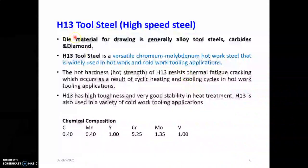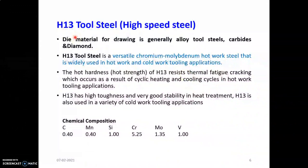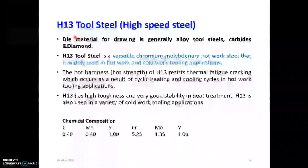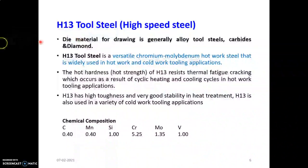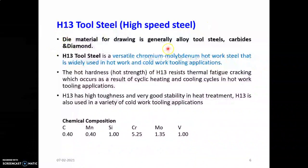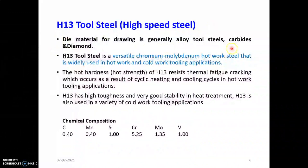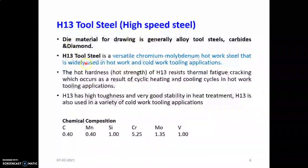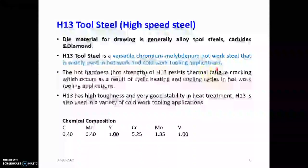The tool steel used for the die - different materials were used in literature, but I am explaining my process. The tube is copper and the die will be S13 tool steel, which is high speed steel. It is generally an alloy tool steel with carbides. S13 tool steel is a versatile chromium molybdenum hot work steel that is widely used in hot work and cold work tooling applications.